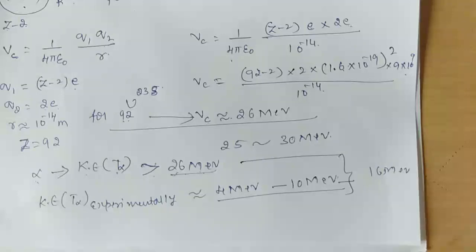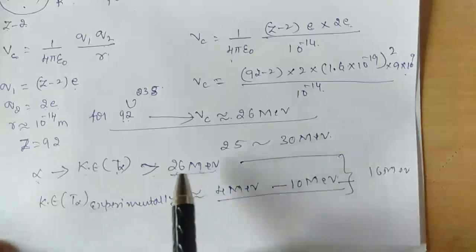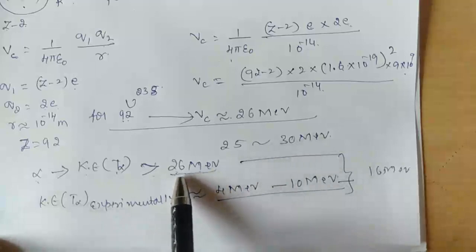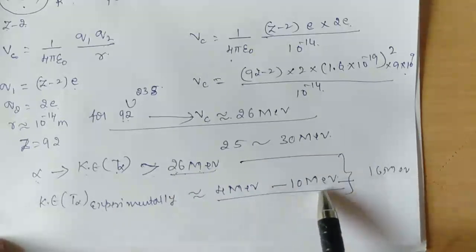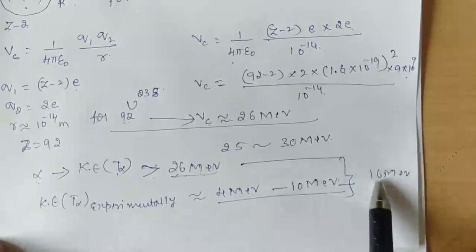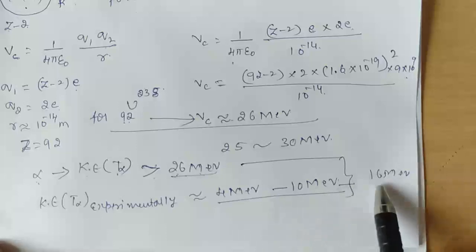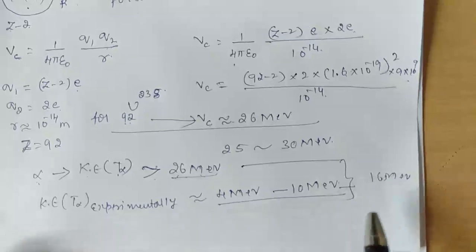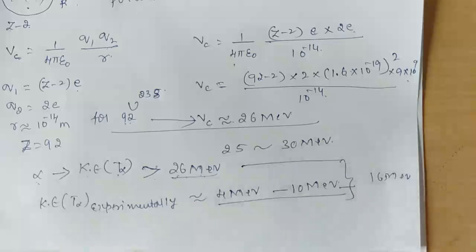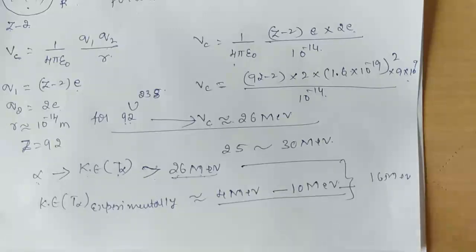Here Gamow did the same thing. The kinetic energy needed theoretically is 26 MeV, but experimentally the maximum measured kinetic energy is 10 MeV — a difference of 15 to 16 MeV — yet alpha decay takes place. This means the classical assumption must be changed; we have to go for quantum mechanics. By using quantum mechanics, Gamow was able to explain alpha decay successfully.